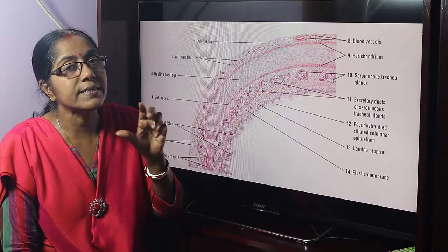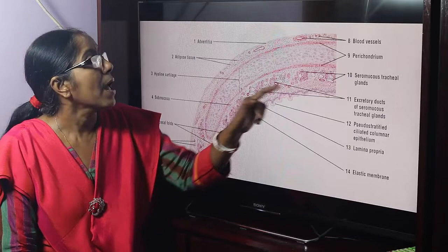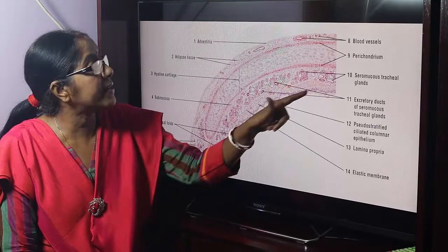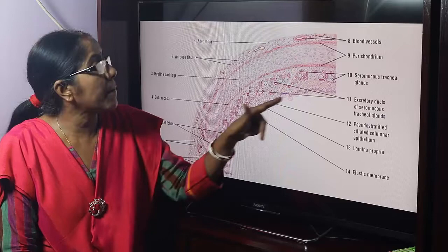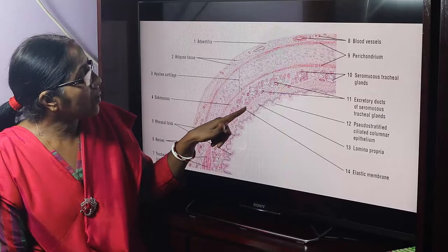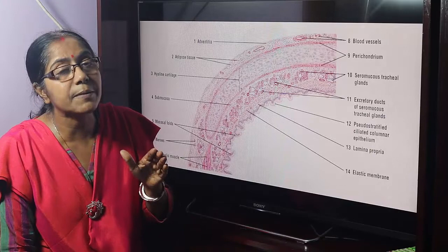The connective tissue is highly vascular, containing arteries and venules. These are the seromucous tracheal glands with visible lumens. The mucosa has a dual layer: lining epithelium and lamina propria. These goblet cells are unicellular glands, and the submucosa contains seromucous glands. This is the elastic membrane — its function is to separate the mucosa from the submucosa.